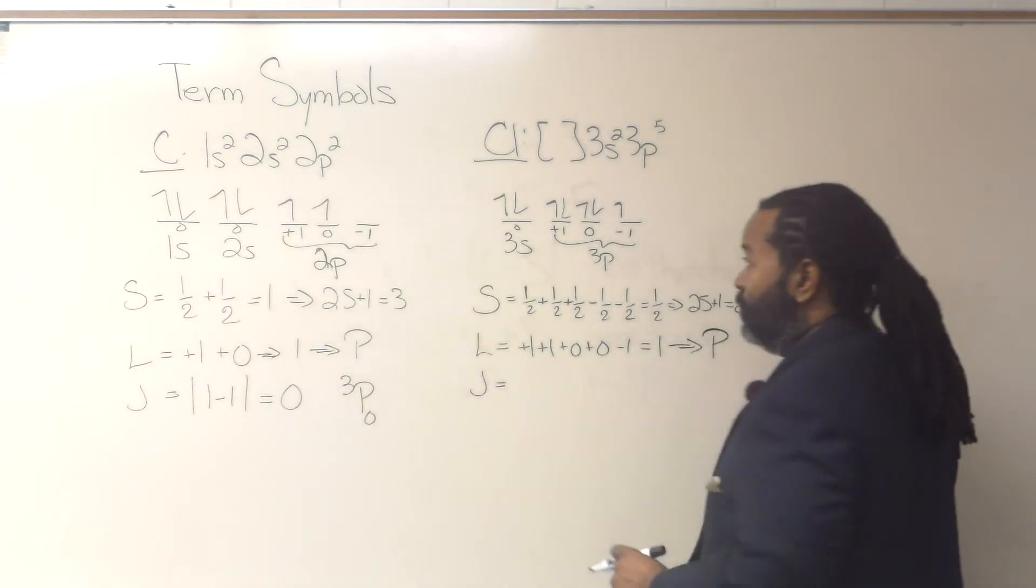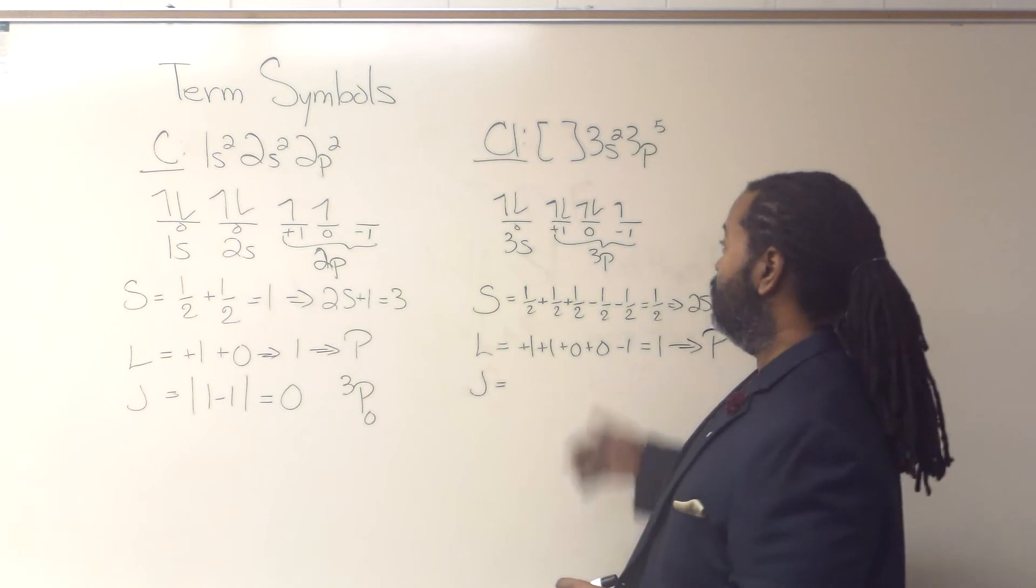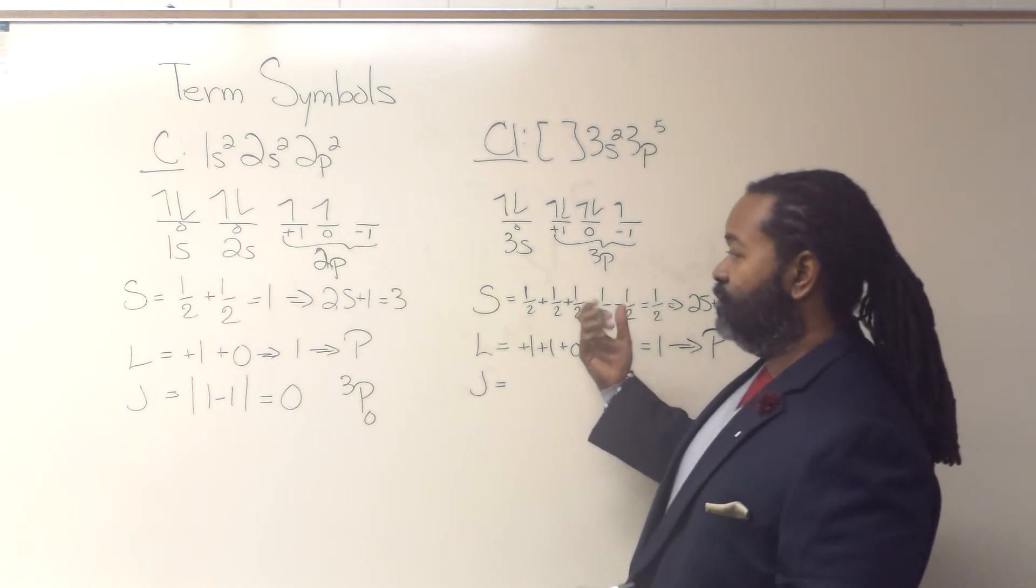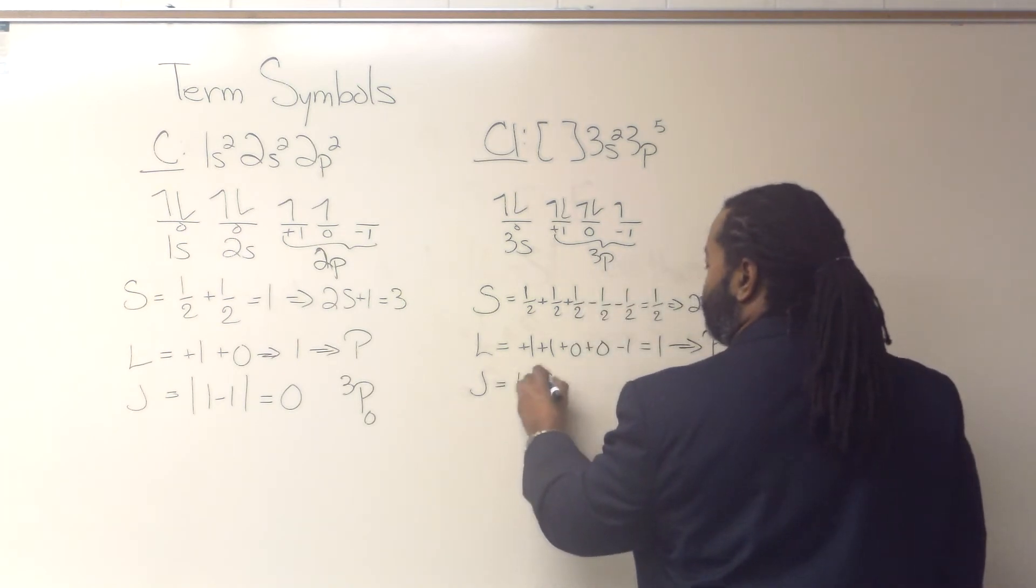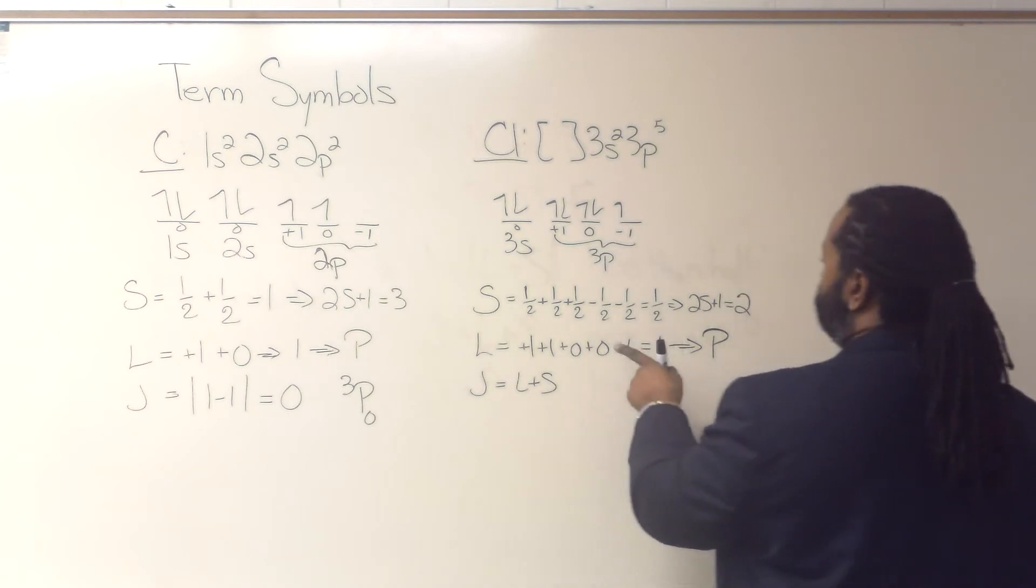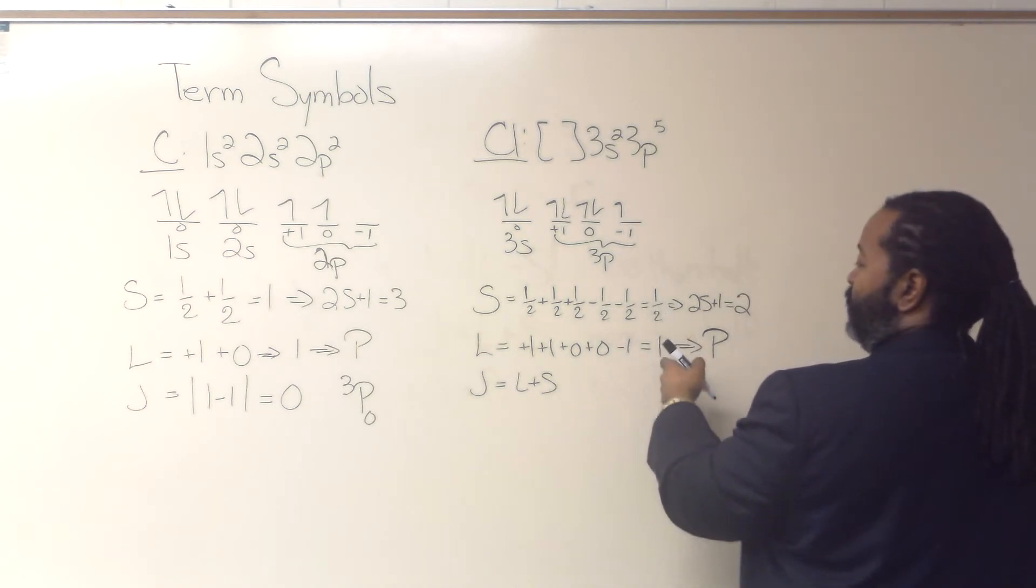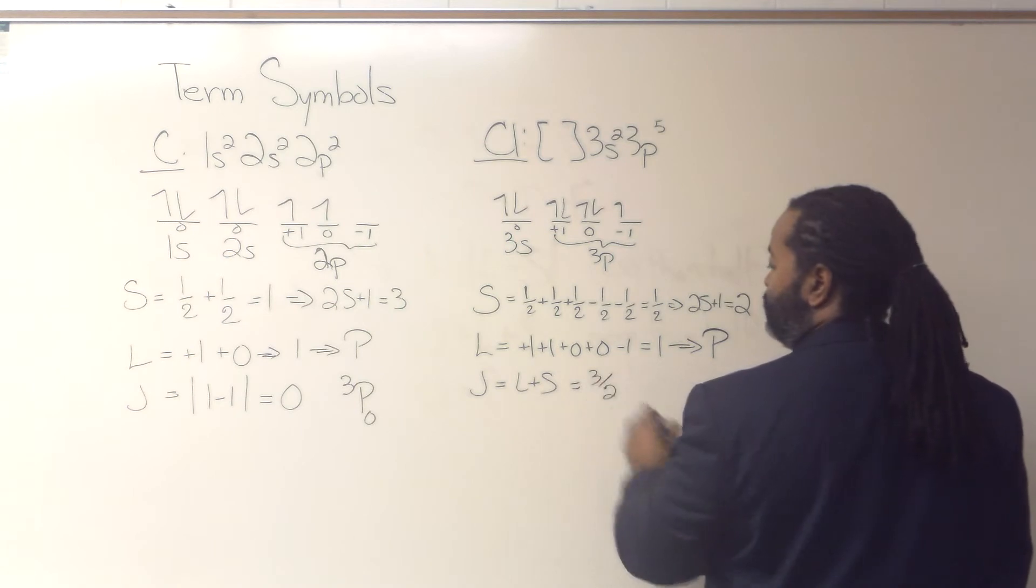And now for j, because this is more than half full, what I want to do is use L plus S. So S was 1 half, L was 1. So that's going to be 3 halves.